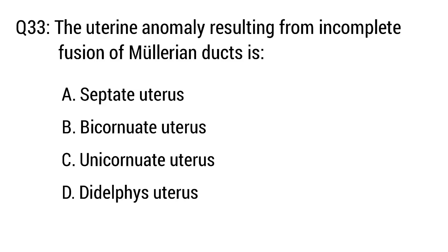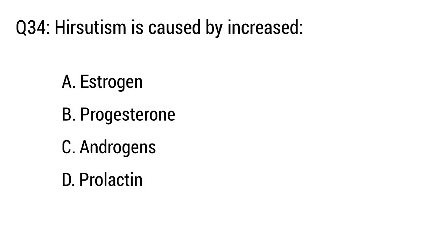Question number 33. Uterine anomaly resulting from incomplete fusion of Müllerian ducts — the right option is option B: Bicornuate uterus.